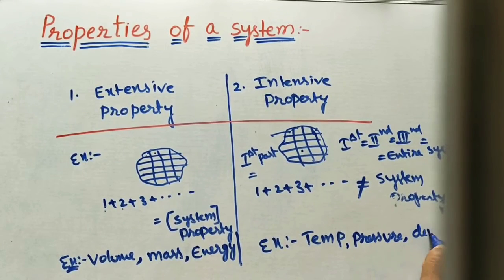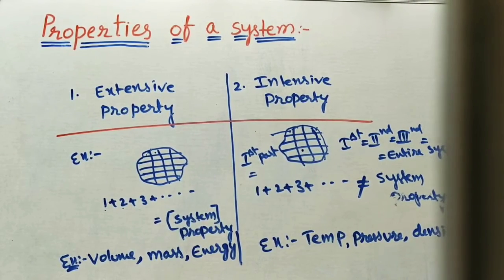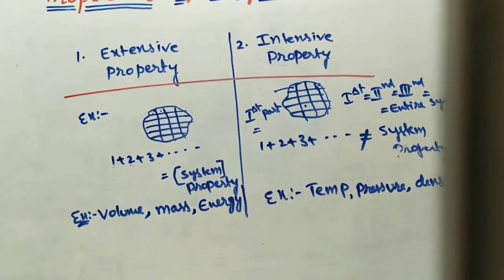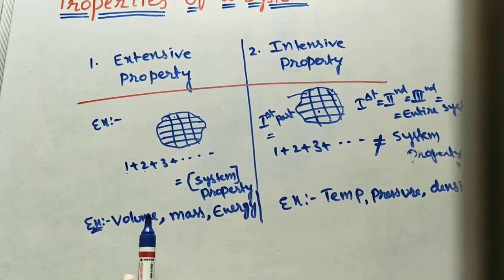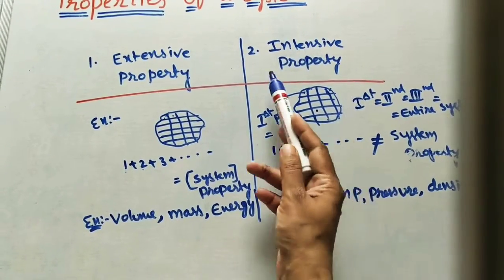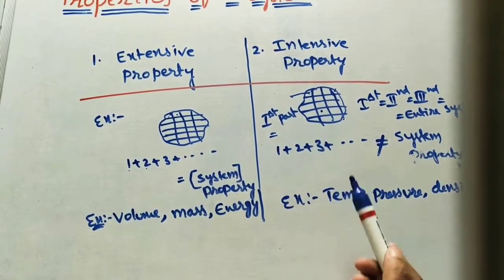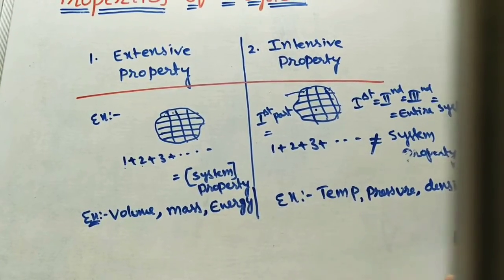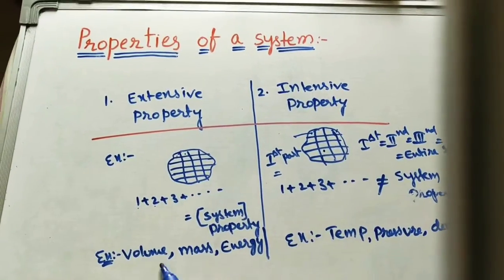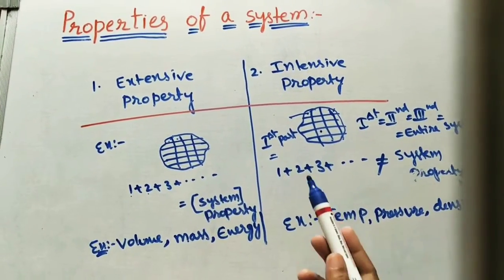Another main difference between these two: extensive properties depend on the mass of the system, while intensive properties are independent — they do not depend on the mass of the system. Whatever the mass, temperature and pressure remain the same; they will not change with mass. Extensive property values will change with mass.